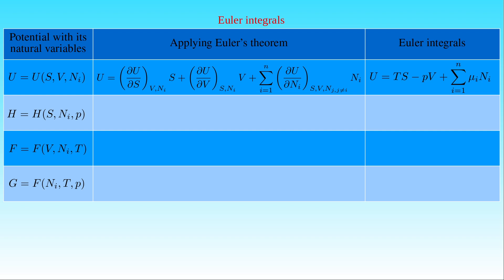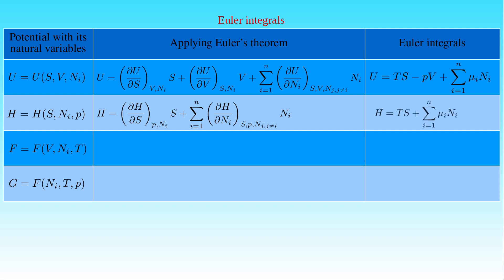The natural variables of the enthalpy H are the entropy S, the number of particles Nᵢ, and the pressure P, but only the first two are extensive properties. Therefore, enthalpy is a homogeneous function of degree 1 in its first two variables, and Euler's theorem gives H as the partial derivative of H with respect to S at constant P and Nᵢ times S, plus the sum of the partial derivative of H with respect to Nᵢ at constant S, P, and Nⱼ (j ≠ i) times Nᵢ. Since the first partial derivative equals T and the second equals μᵢ, the enthalpy H is given by T times S plus the sum of μᵢ times Nᵢ.